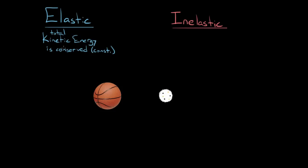We can put this into a mathematical statement. Total kinetic energy conserved. The basketball has some kinetic energy before the collision — I'll use the letter K for kinetic energy. So I'll have kinetic energy of the basketball before the collision. I'll use two subscripts: one to denote which object I'm talking about — B for basketball — and the second letter to represent when, where I stands for initial, like before the collision.